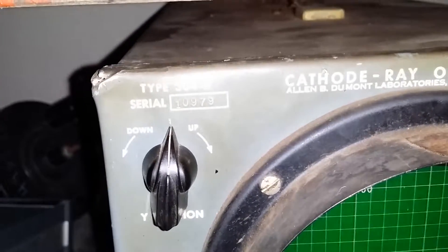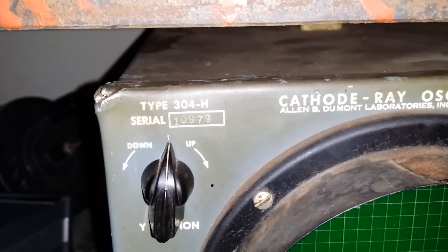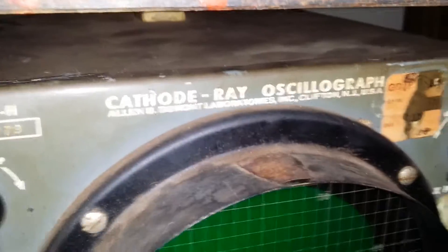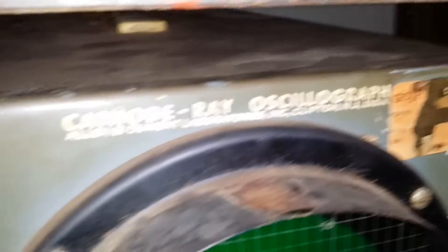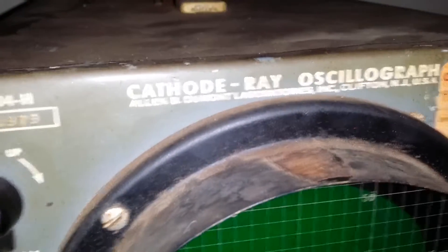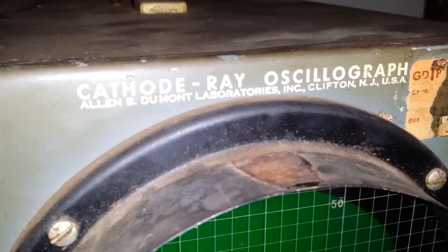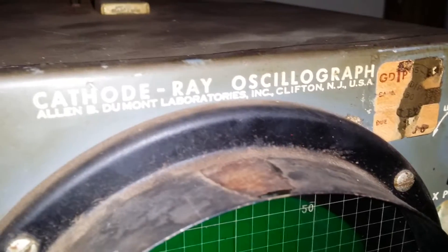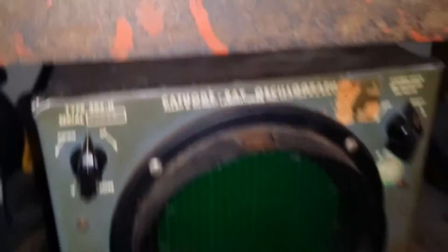This here is a, come on, if the camera would focus. It's a Type 304H oscilloscope. Back then they called them oscillographs. Built by the Allen B. Dumont Laboratories Inc., Clifton, New Jersey, United States of America. Therefore, you can tell it's pretty old.